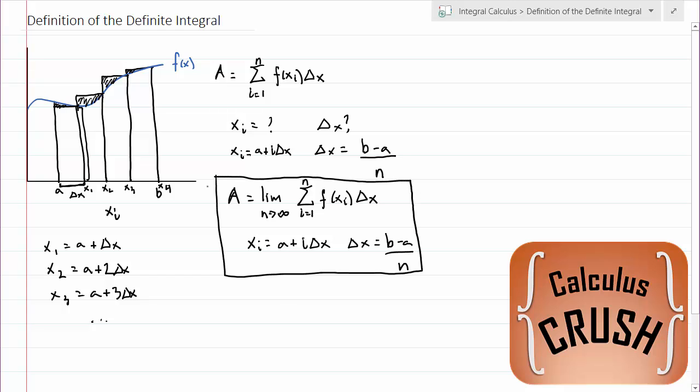So all of this stuff here is the definition of the area underneath the curve f of x between the points a and b. We define this as the integral from a to b of f of x dx. So this notation here, this guy right here, the limit as n goes to infinity of the summation of i equals 1 to n, we just replace that with an integral sign. And f of xi just becomes f of x and delta x becomes dx.